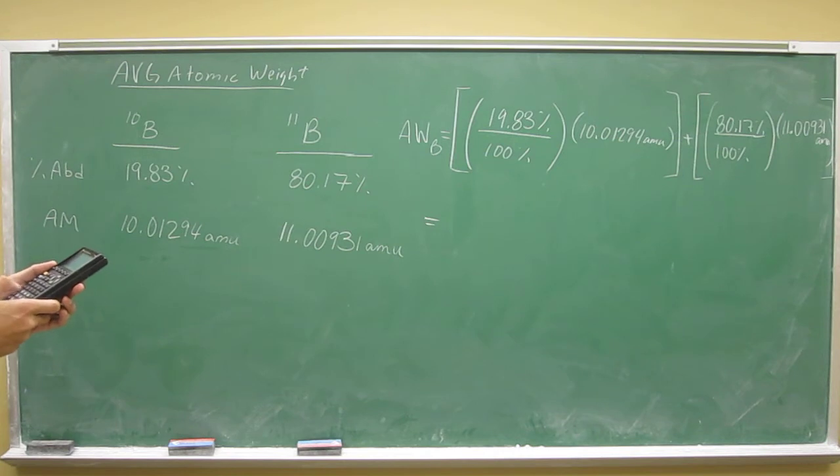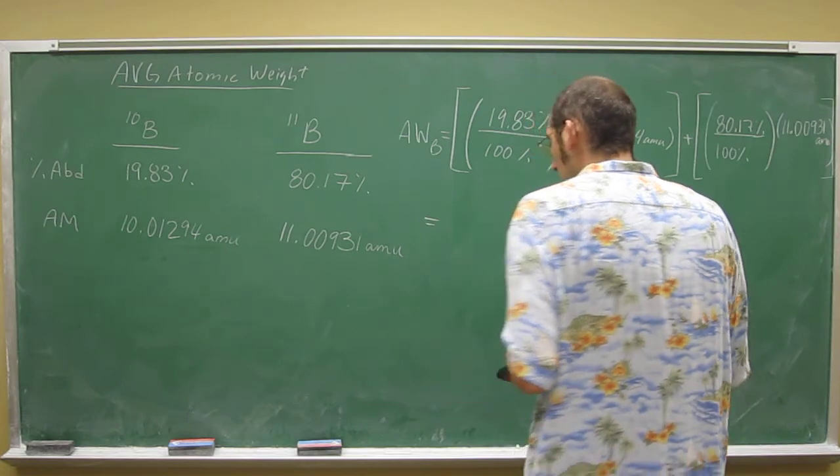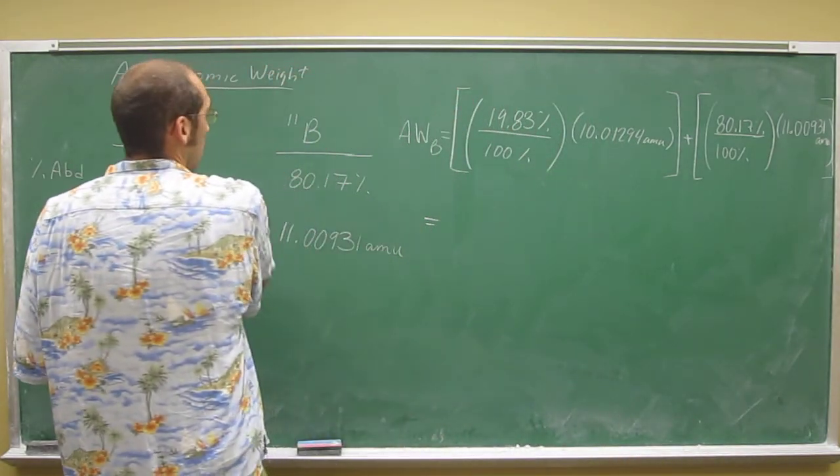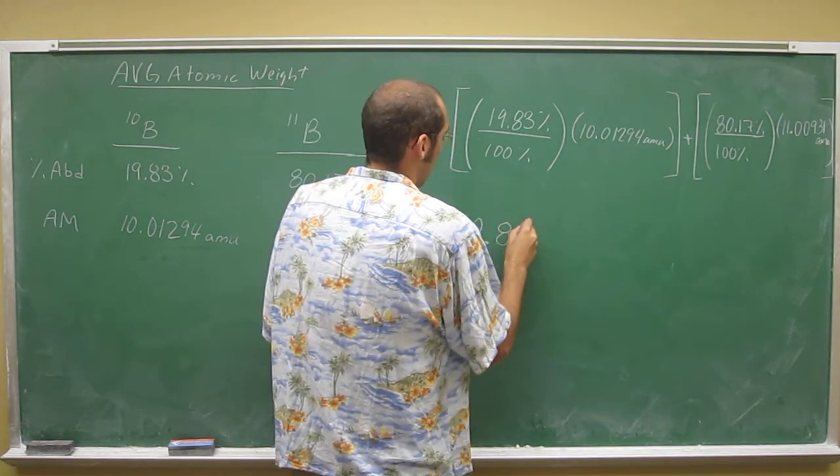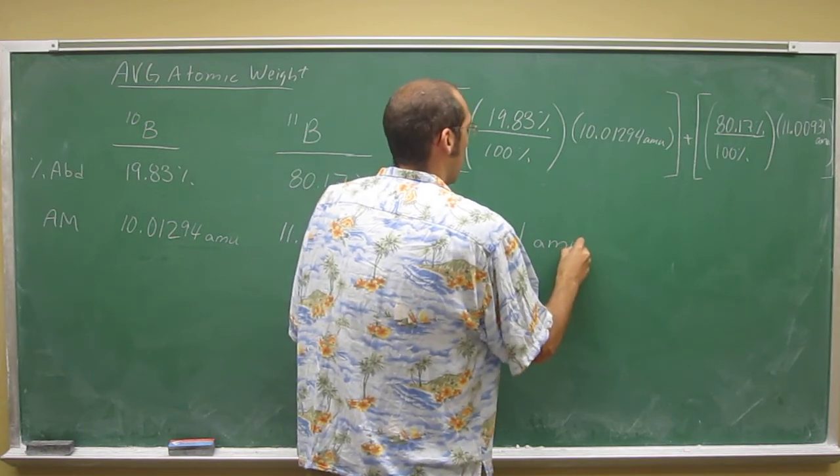Okay. So 19.83 divided by 100 times 10.01296. And hopefully you get the same answer as me, and we'll take it to 4 sig figs because of the two abundances. It's going to be 10.81 a.m.u.